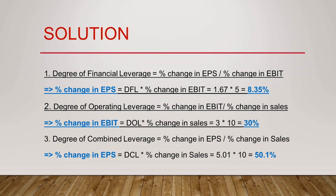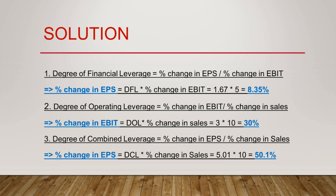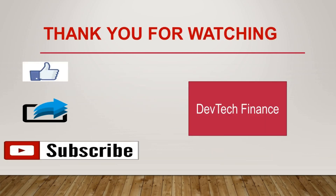We have Operating Leverage = 3 and percentage change in sales = 10%, so: 3 × 10% = 30% change in EBIT. If there is a 10% change in sales, a 30% change happens in Earnings Before Interest and Tax. For Degree of Combined Leverage, the formula is percentage change in EPS / percentage change in sales: 5.01 × 10% = 50.1% change in EPS. This is how we use the formulas to derive results. Thank you for watching — I hope you liked my video. Do share and subscribe to my channel DevTechFinance.